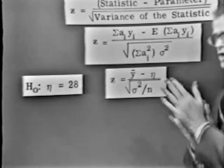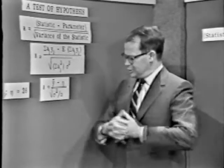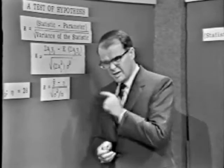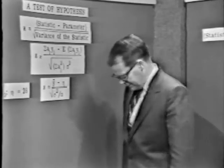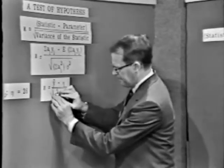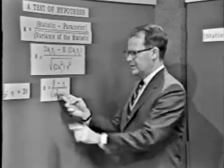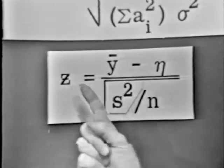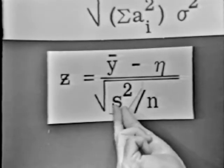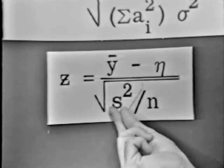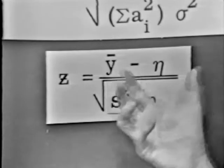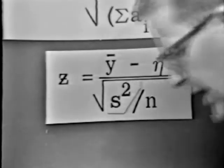What would any engineer do in this case? He'd say: let's get the best guess for sigma squared and stuff it in. And so this leads us to put in the estimate of the variance, s squared. Now, the minute we put in s squared, this expression no longer equals Z, because s squared is an estimate of sigma squared — and as an estimate, sometimes it's larger and sometimes smaller than sigma squared. So this quantity no longer equals Z.